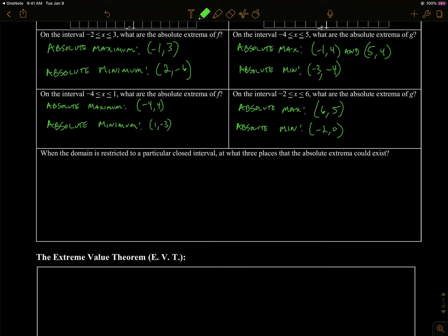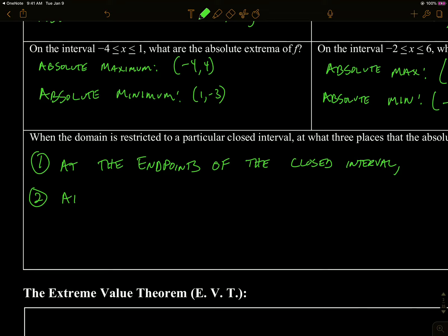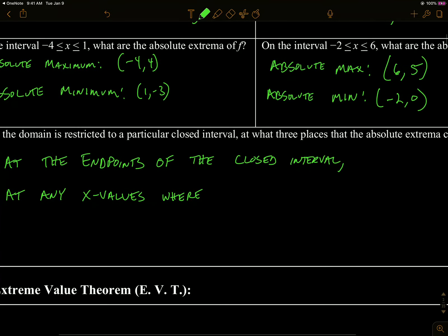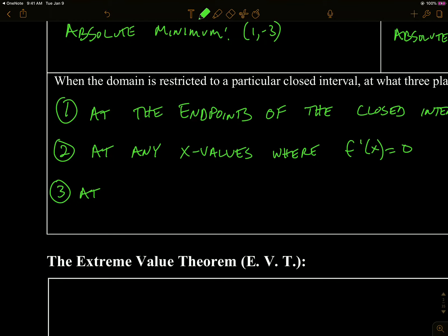Let's look at when the domain is restricted. Let's make a summary: at what three places could the absolute extrema exist? Absolute extrema could exist first at the endpoints of the closed interval — closed is key. The second place they could occur is at any relative extrema. Relative extrema are going to come from two kinds of x values — we don't have to do sign analysis to see if they're extrema. This will allow us a little shortcut. If we have a closed interval, we know relative extrema come from when the derivative is zero or also when it's undefined.